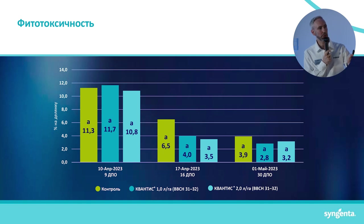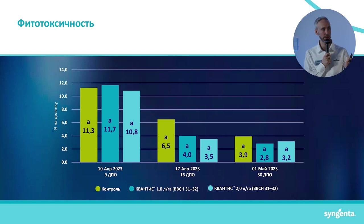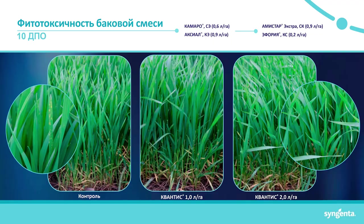Looking at 16 days after treatment (16 DAT): on the control variant, phytotoxicity was 6.5%, while on the Kvantis variants it was reduced to 4% and 3.5%. The same trend was observed at 30 DAT. In the field photos I took myself, you can see chlorotic spots on some leaves in the control, while on the Kvantis variants — especially at 2 liters — they were practically absent, though statistically the difference was within the margin across all variants.